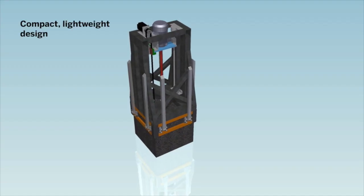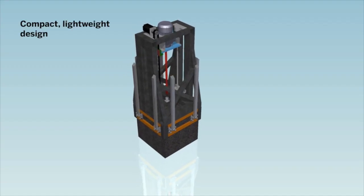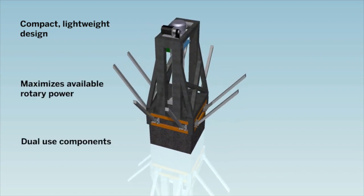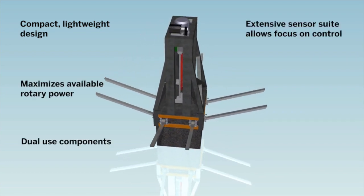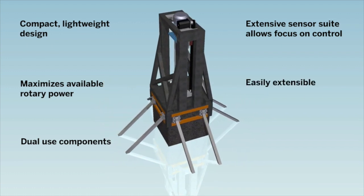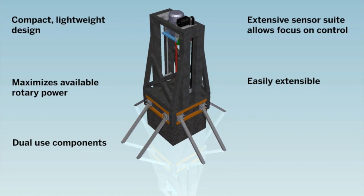NanoRig is a compact, lightweight entry into the DSAS competition that maximizes the available rotary power, features many dual-use components, and allows much of the focus to be on effective control strategies. It is also easily extensible due to its small size and accessible tower.